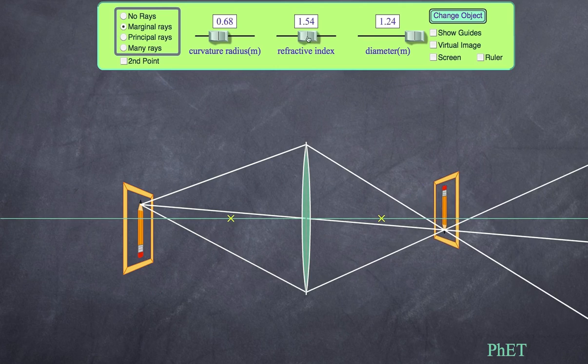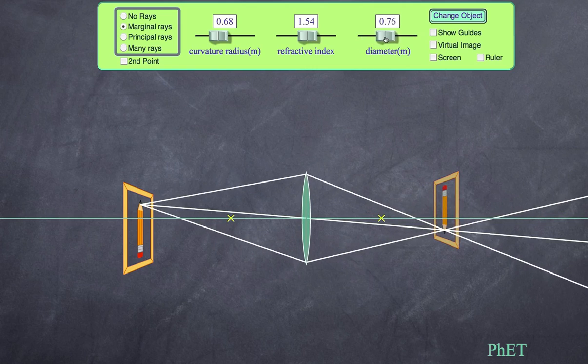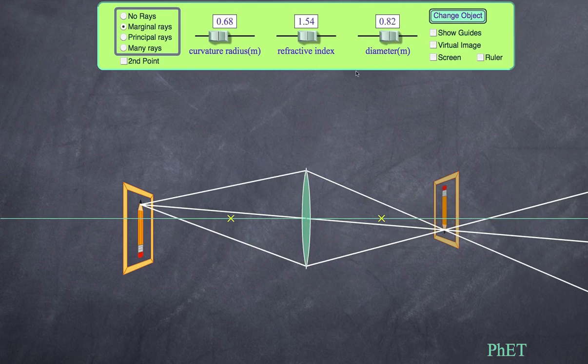You can see how the refractive index affects the real image, and really diameter doesn't do much except affect the intensity of the real image. I hope that gives you a little bit of understanding in terms of qualitatively how real images form with a convergent lens. Thanks for listening, bye for now.